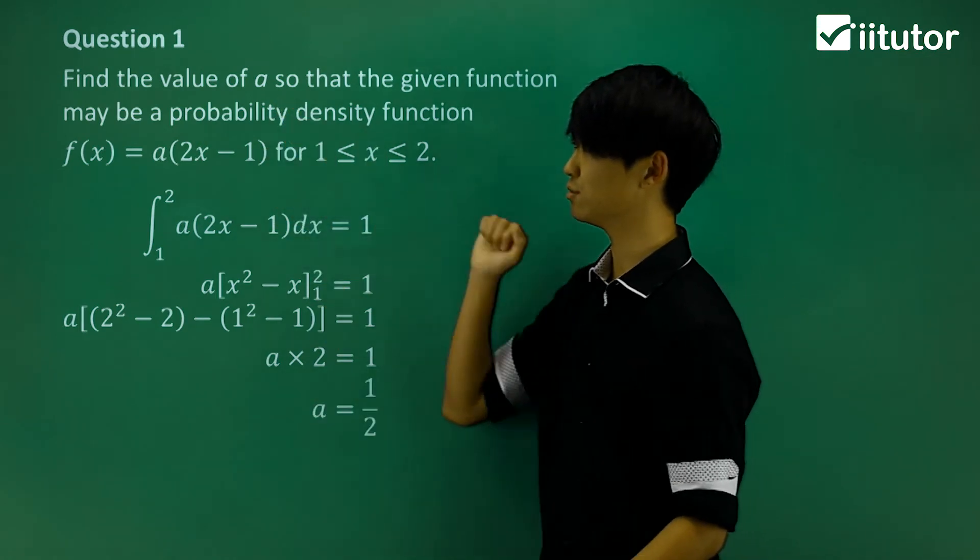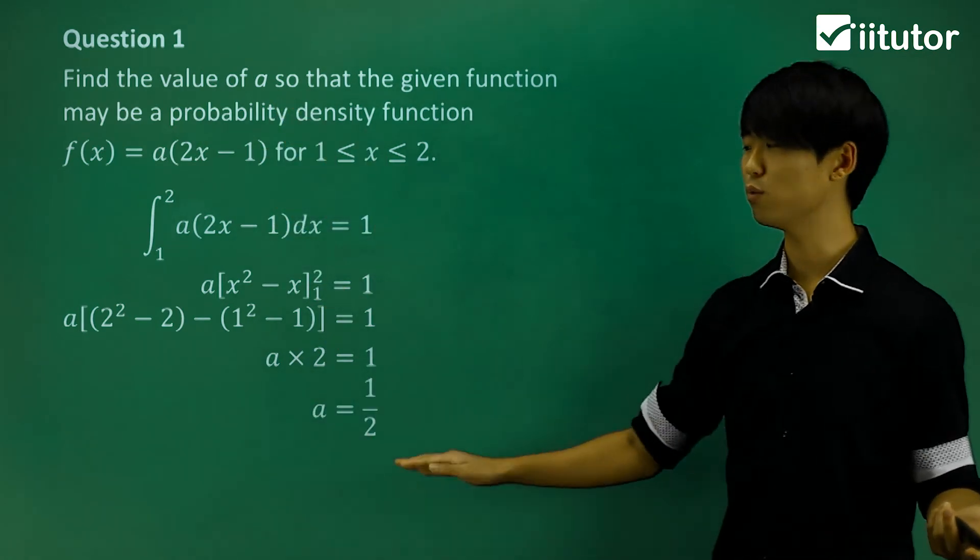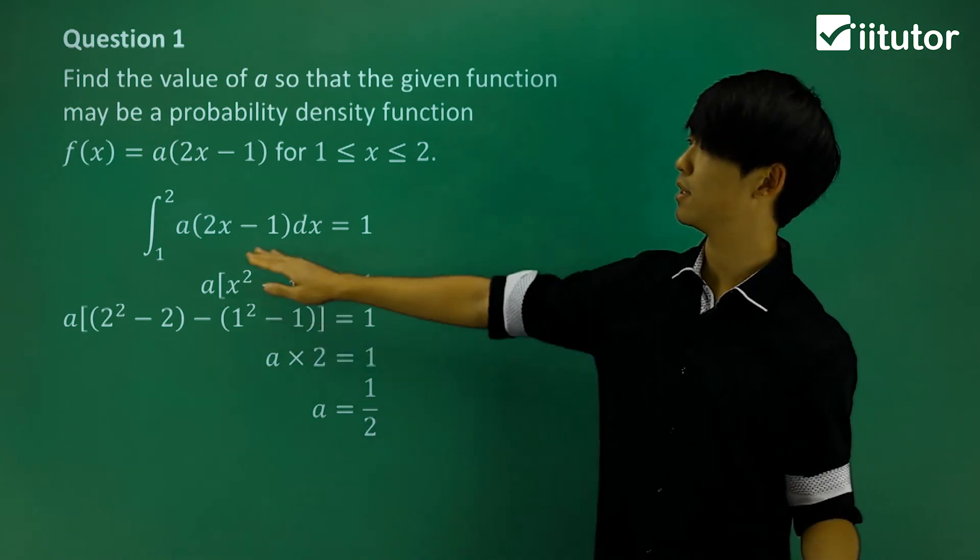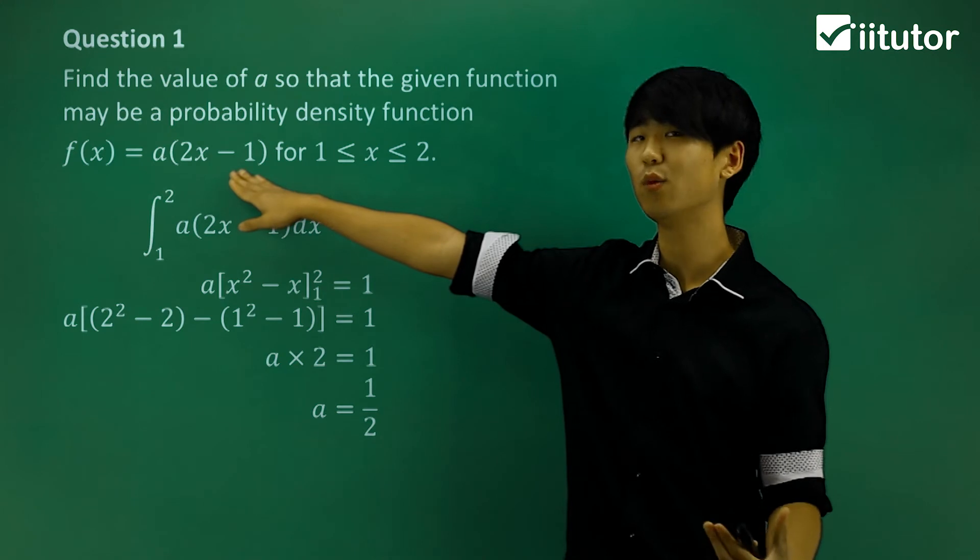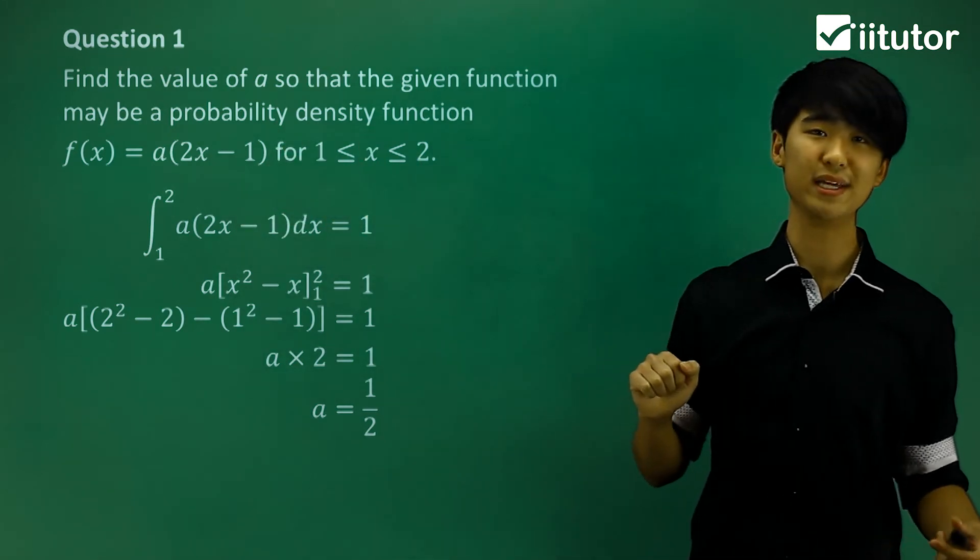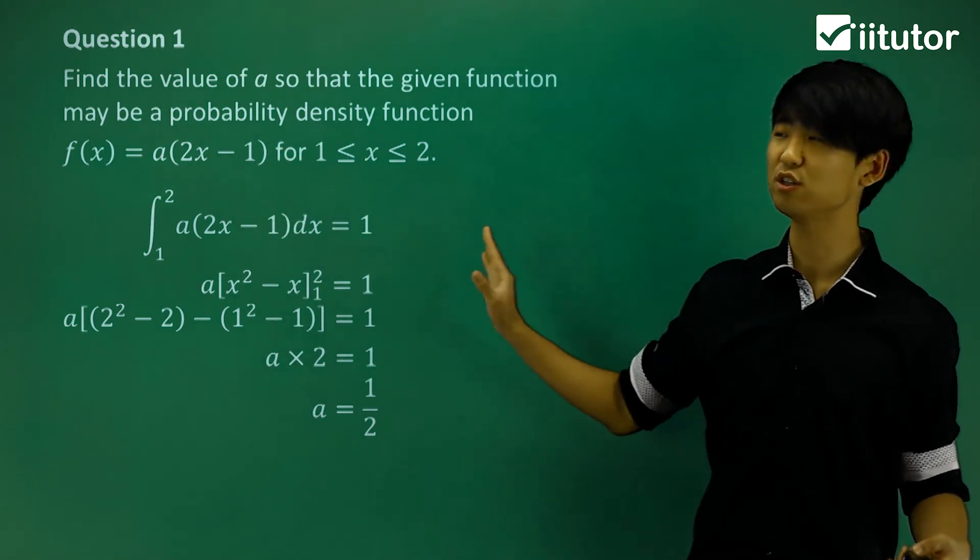So let's answer this question. So finding the value of a, well if a is equal to a half, well then that allows my function to have an area under the curve equaling to 1, which allows it to be a probability density function. So that was answering question number 1.